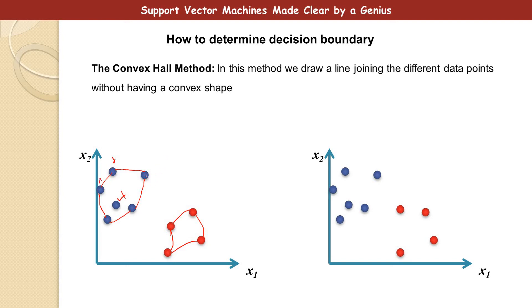So using this convex hull method, we easily can see which points or data points are actually support vectors. Maybe this one, maybe this one, maybe this one. So, but for now, this is how the convex hull method works.